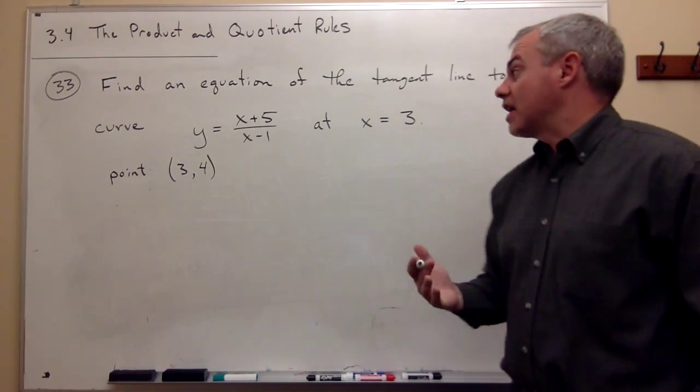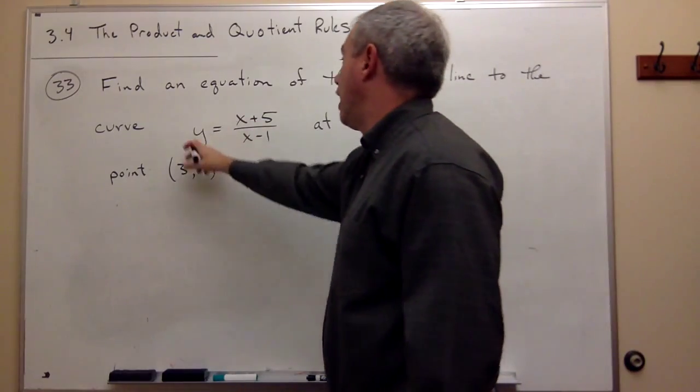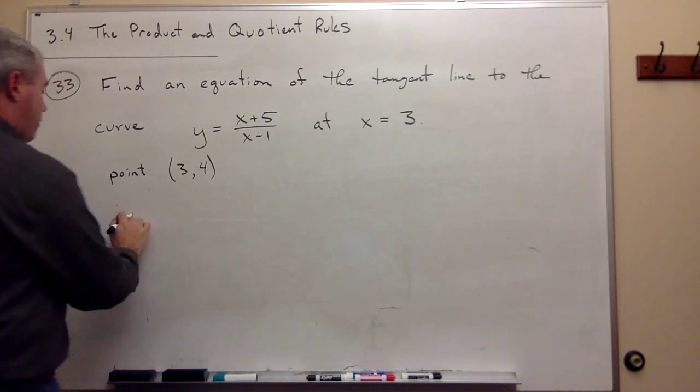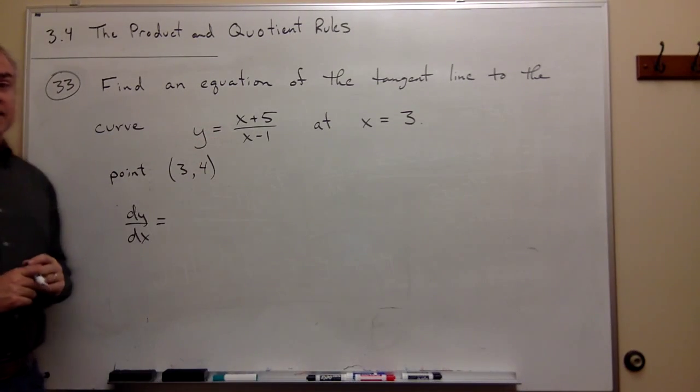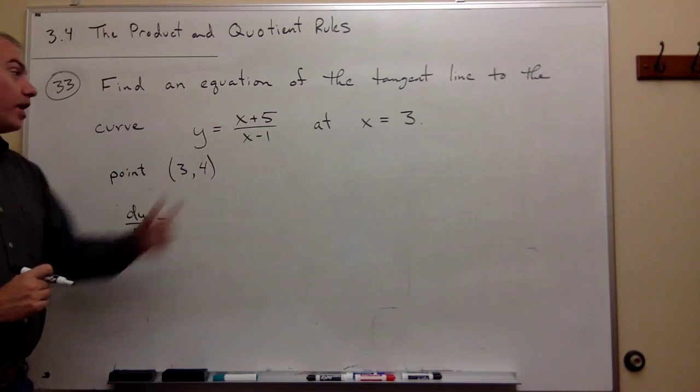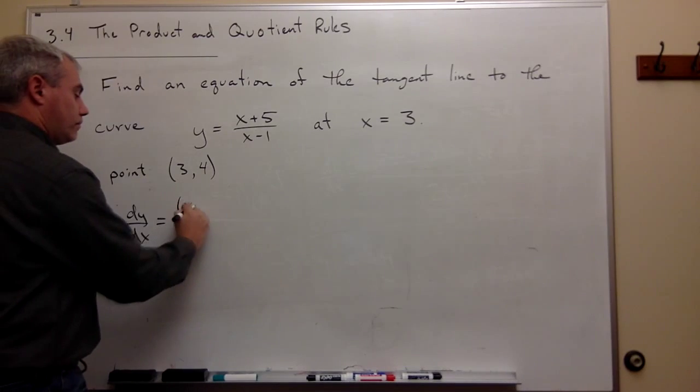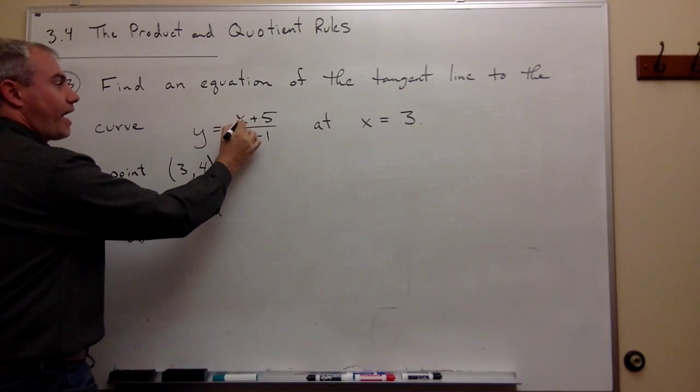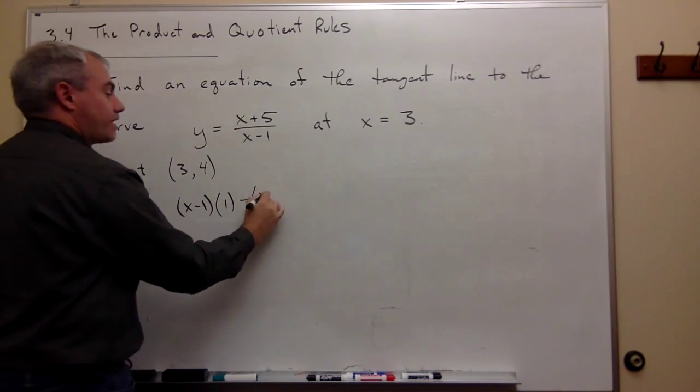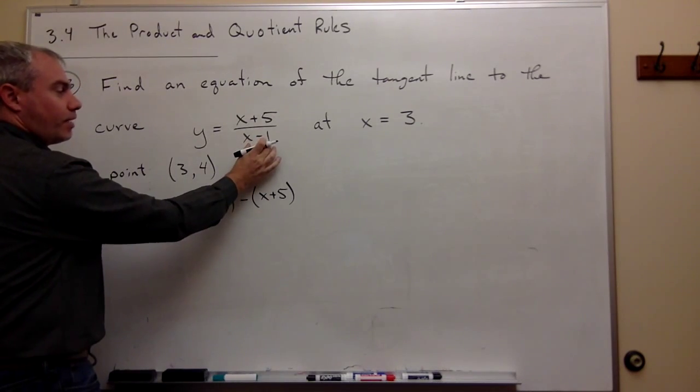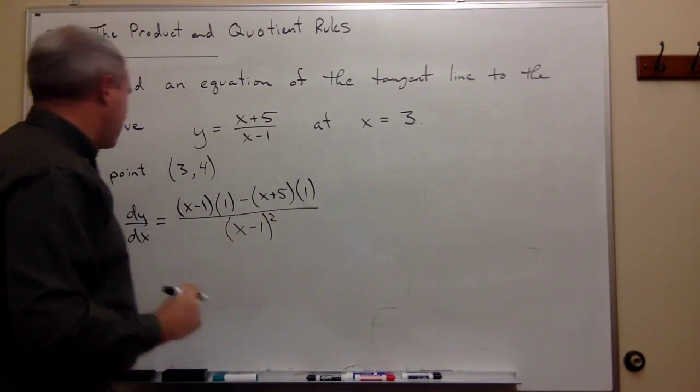The way that I figure out its slope is I want to take the derivative of this function and then plug in 3 to see what's the slope when x equals 3. So dy over dx equals, and we notice that this is a quotient, so I'm going to need to use the quotient rule. I write the bottom x minus 1 times the derivative of what's on the top, which is 1, minus the top x plus 5 times the derivative of what's on bottom, which is also 1, divided by x minus 1 quantity squared.